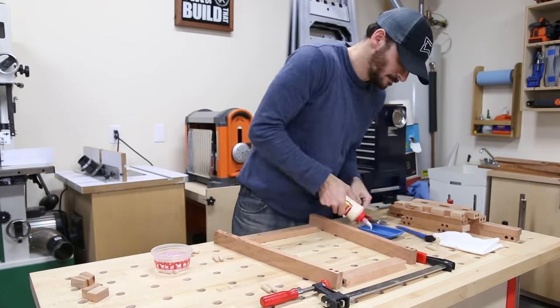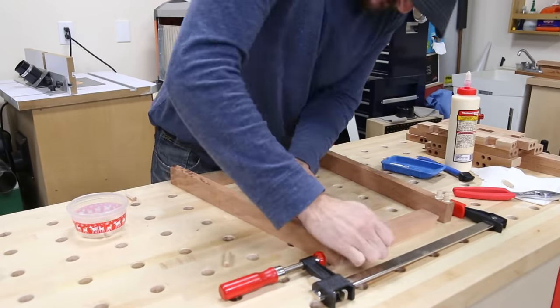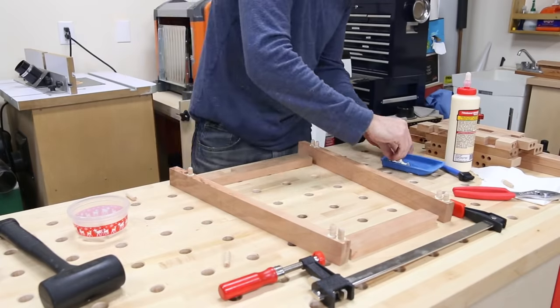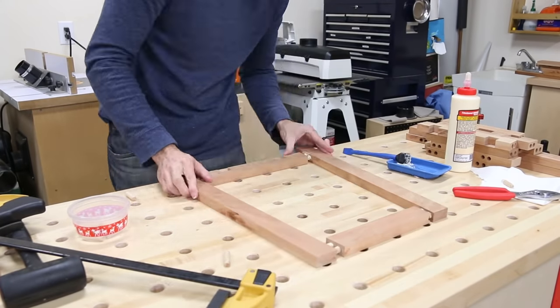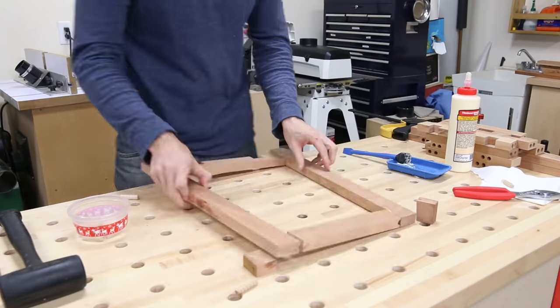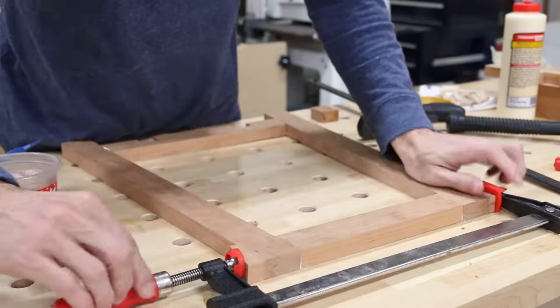Assembling the dowel joints is pretty straightforward since the dowels do a great job of aligning everything. I dipped the dowels into the glue and then put them in the legs. Now one thing I've found is that the dowels vary a little bit in diameter where some of them are very loose and some of them you have to hammer in. But if you have a tight joint just use some clamps or a mallet to gently persuade it into place.